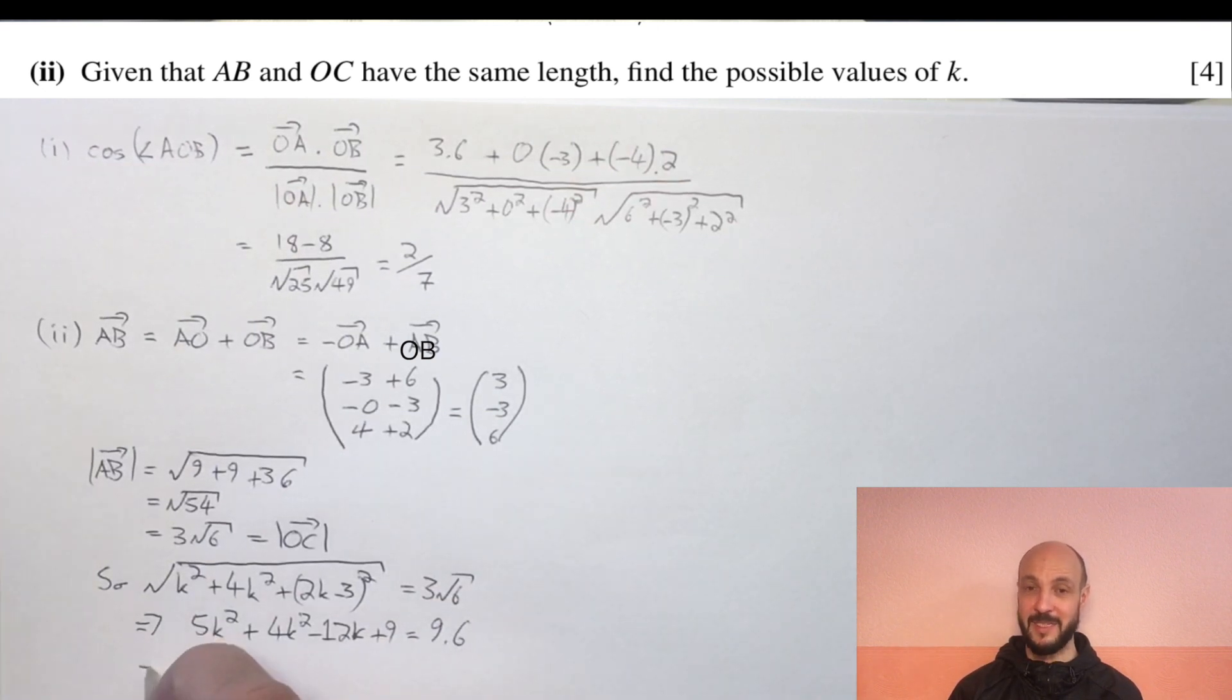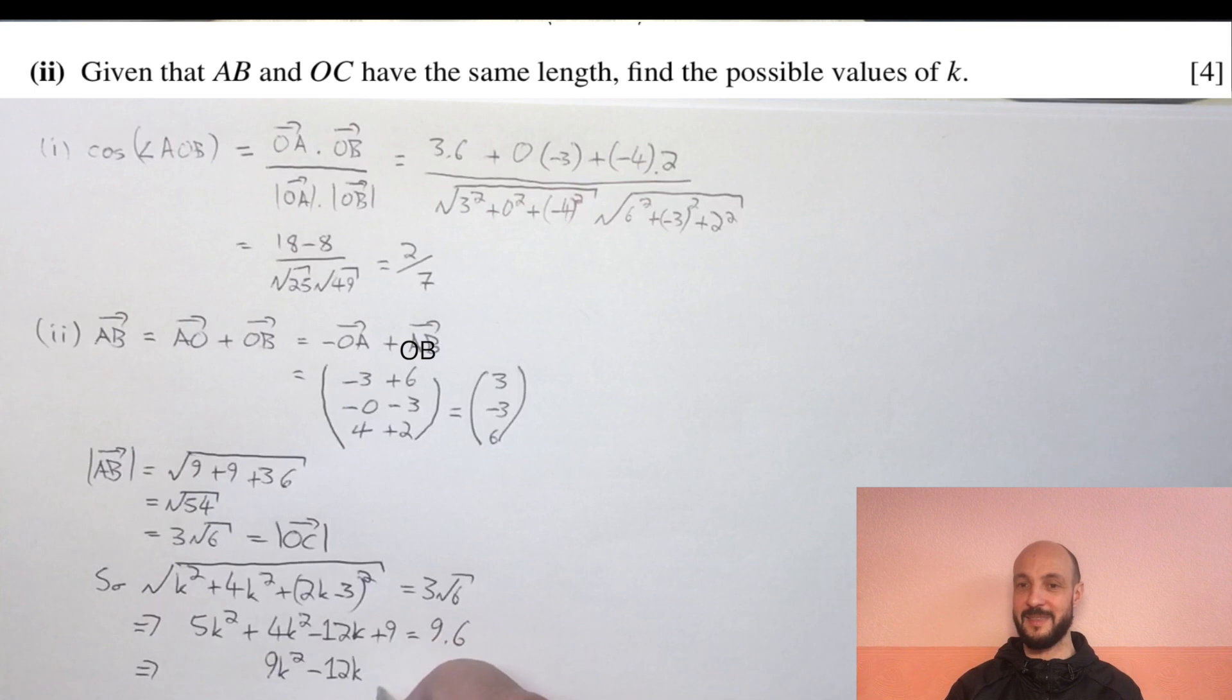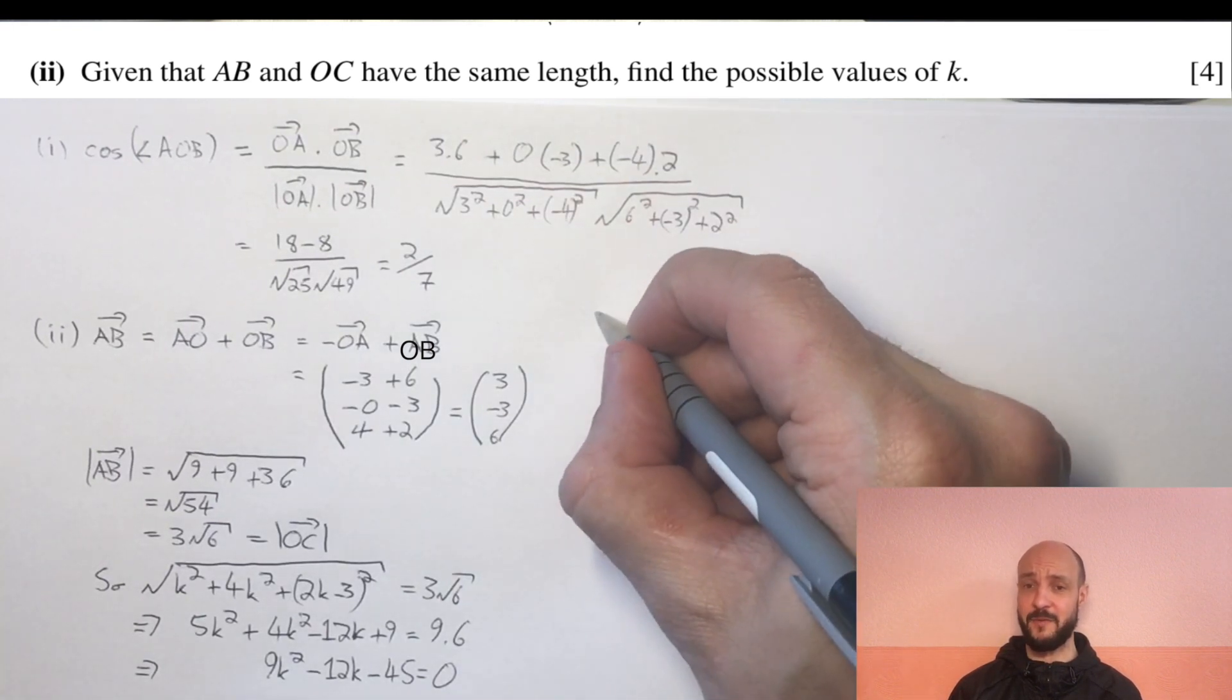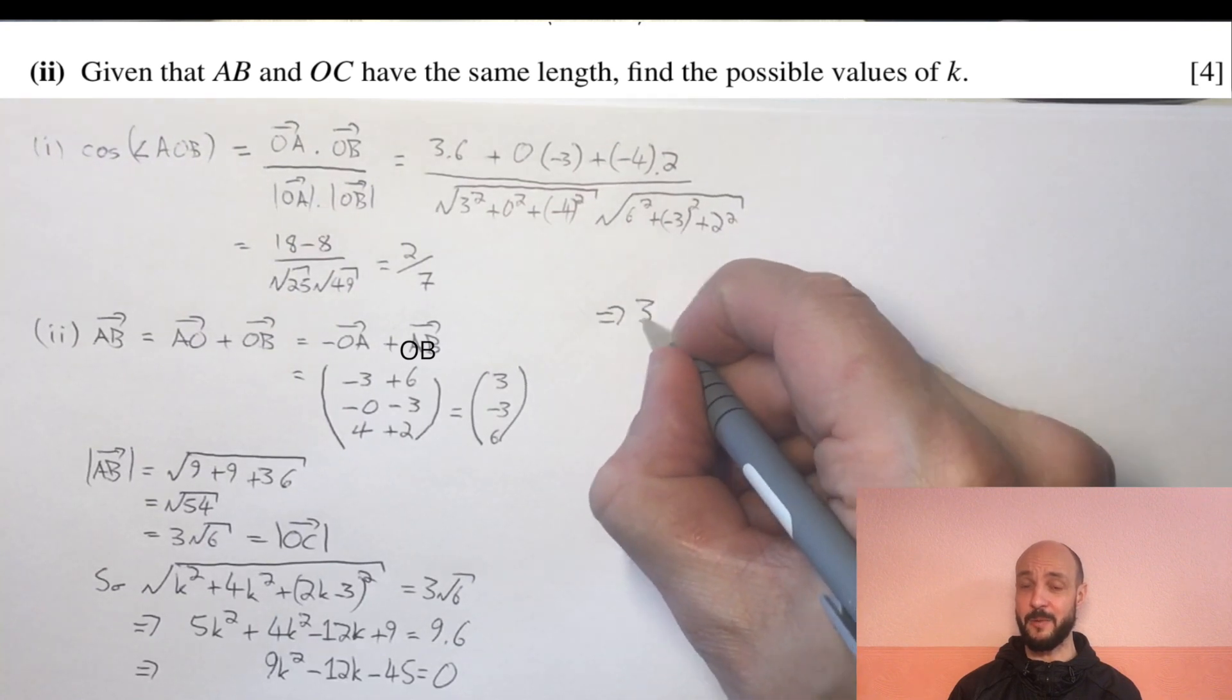We get K squared plus 4K squared expanding the brackets plus 4K squared minus 6K minus 6K so minus 12K plus 9 is equal to 9 times 6. Getting our K squared terms together we've got 9K squared minus 12K and then one lot of 9 minus 6 lots of 9 gives us minus 5 lots of 9, so minus 45 equals 0.